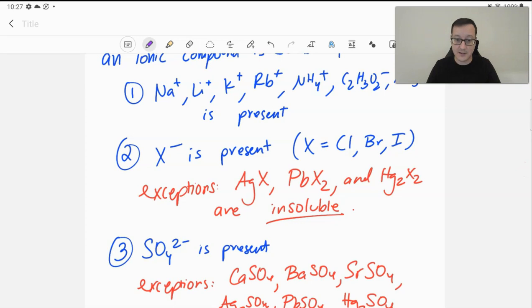If you have sulfate present, you will generally be soluble. Iron 3 sulfate, potassium sulfate, rubidium sulfate, ammonium sulfate, cobalt 2 sulfate, all soluble. Right?